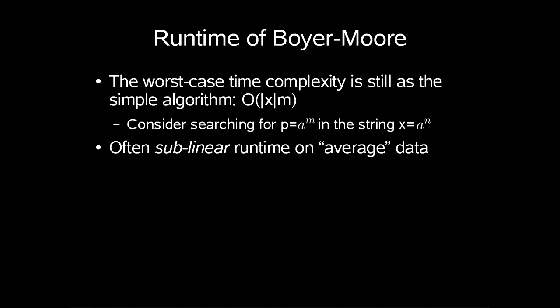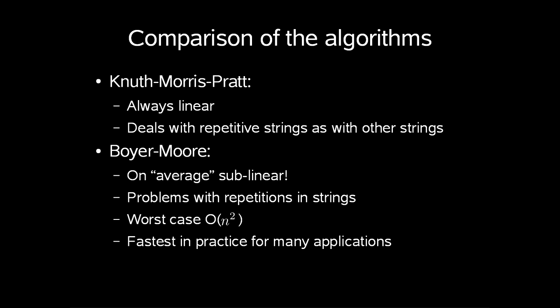To compare these two algorithms: Knuth-Morris-Pratt is always linear. It deals with repetitive strings as with other strings. Boyer-Moore has an average of sub-linear time, but it will run into problems with repetitions in string. The worst case is order n squared, but in practice this is the fastest for many applications.